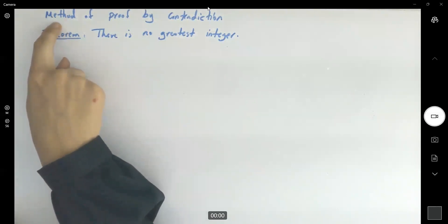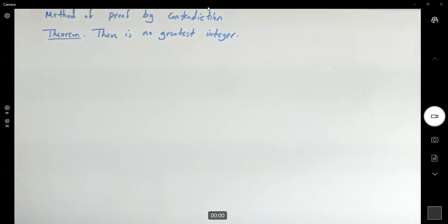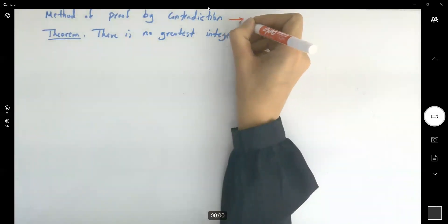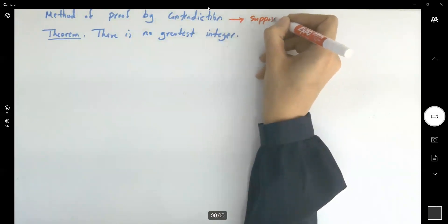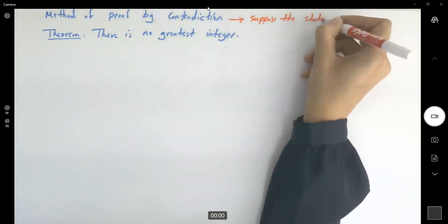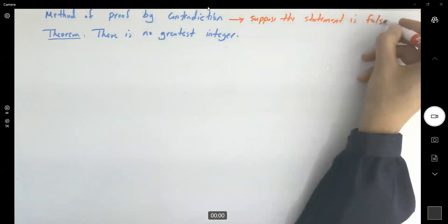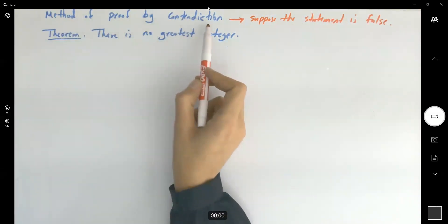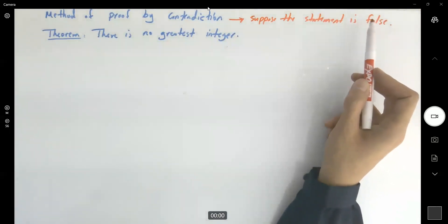One popular method in proving statements like this is called proof by contradiction. In the method of proof by contradiction, you assume the statement is false and try to reach a contradiction.